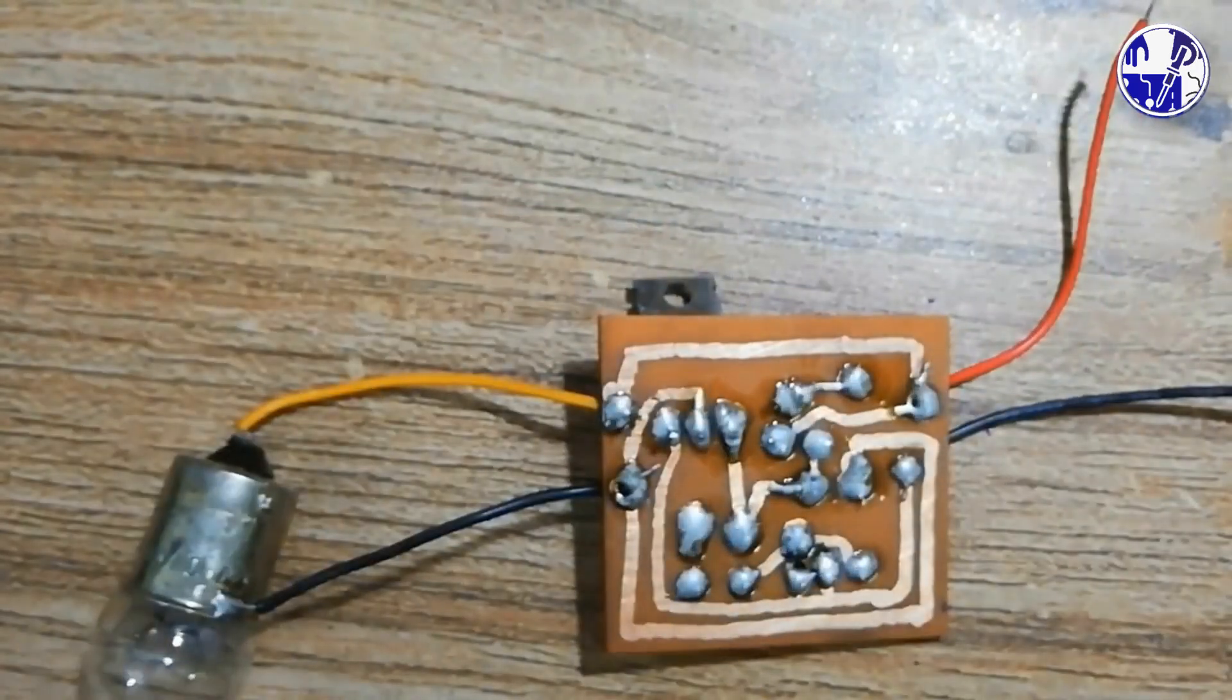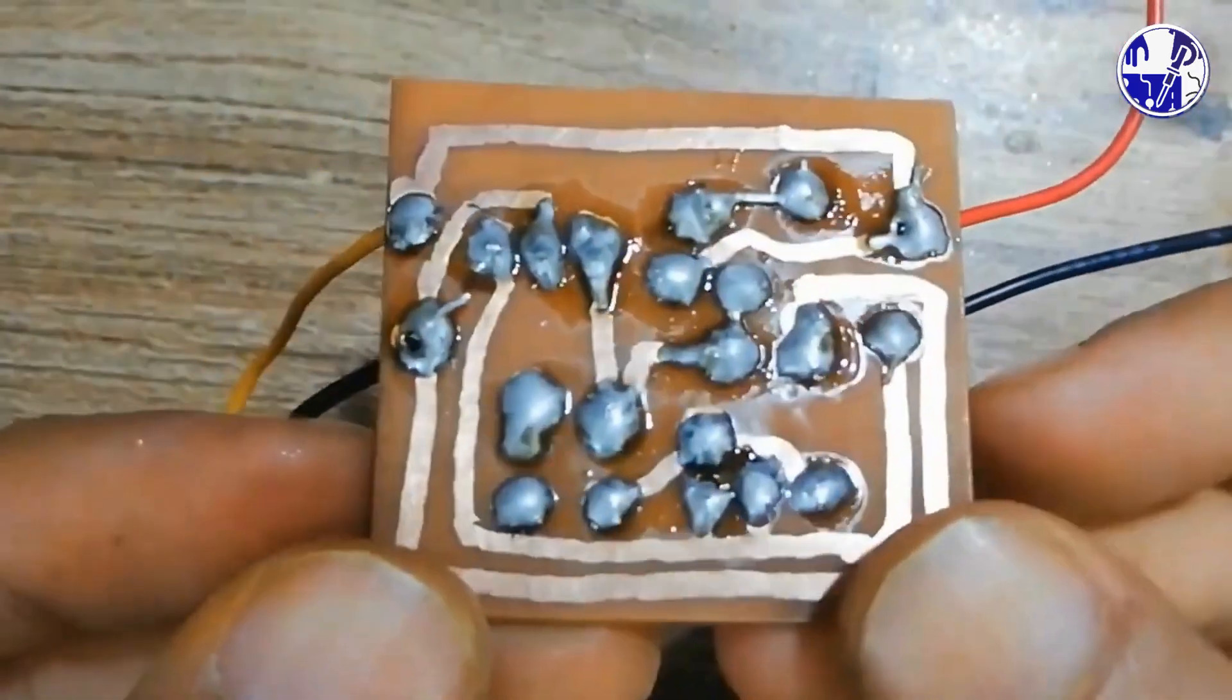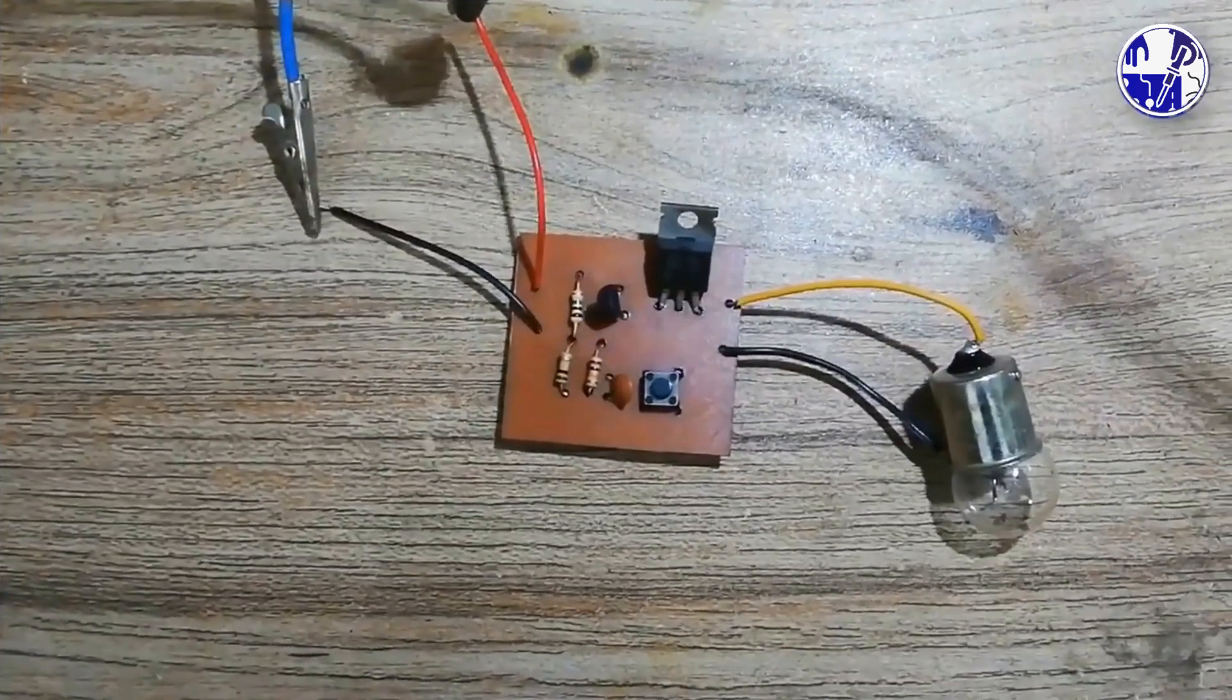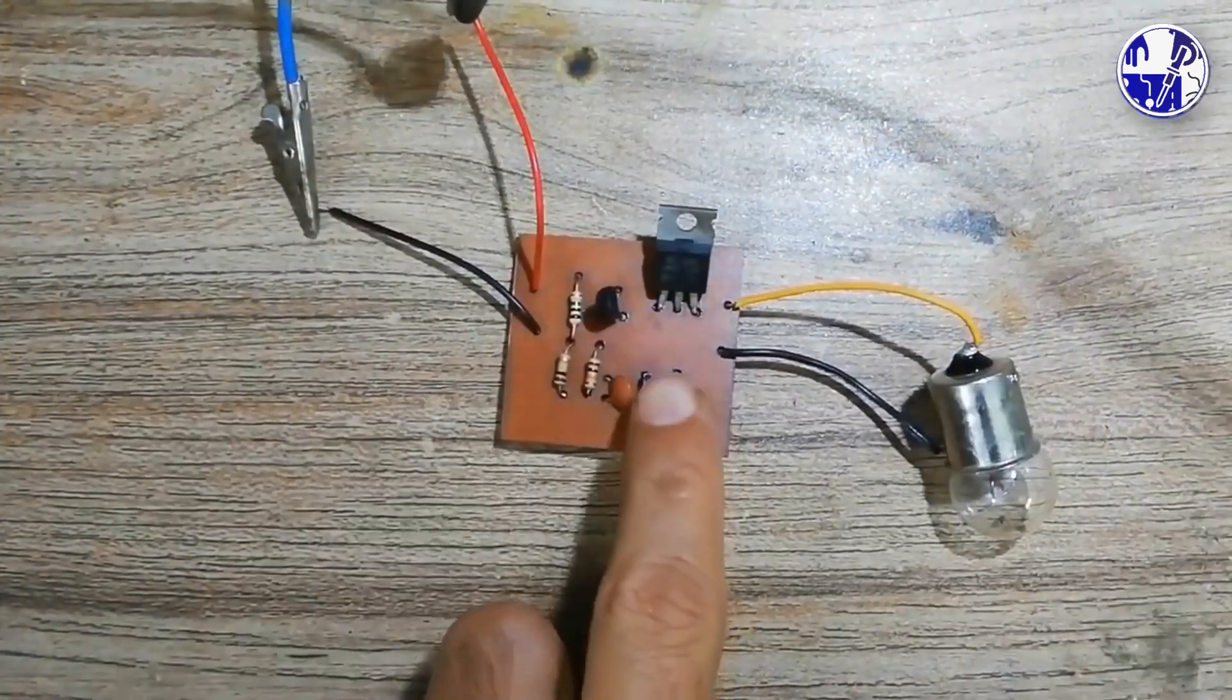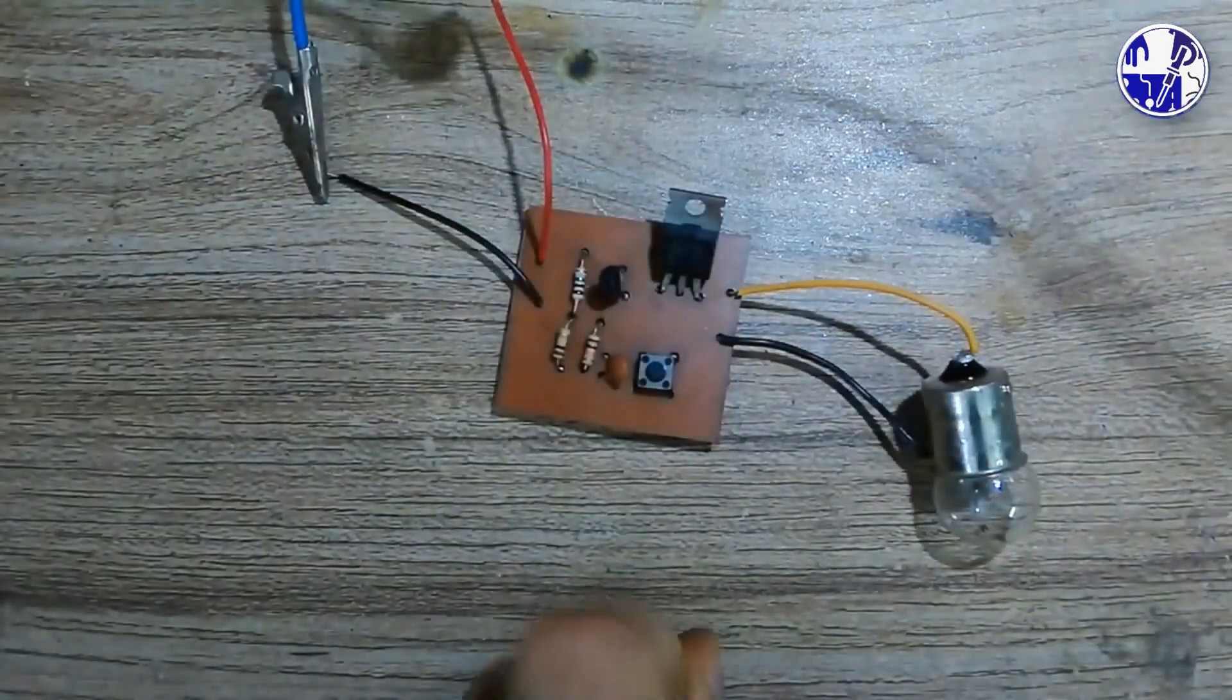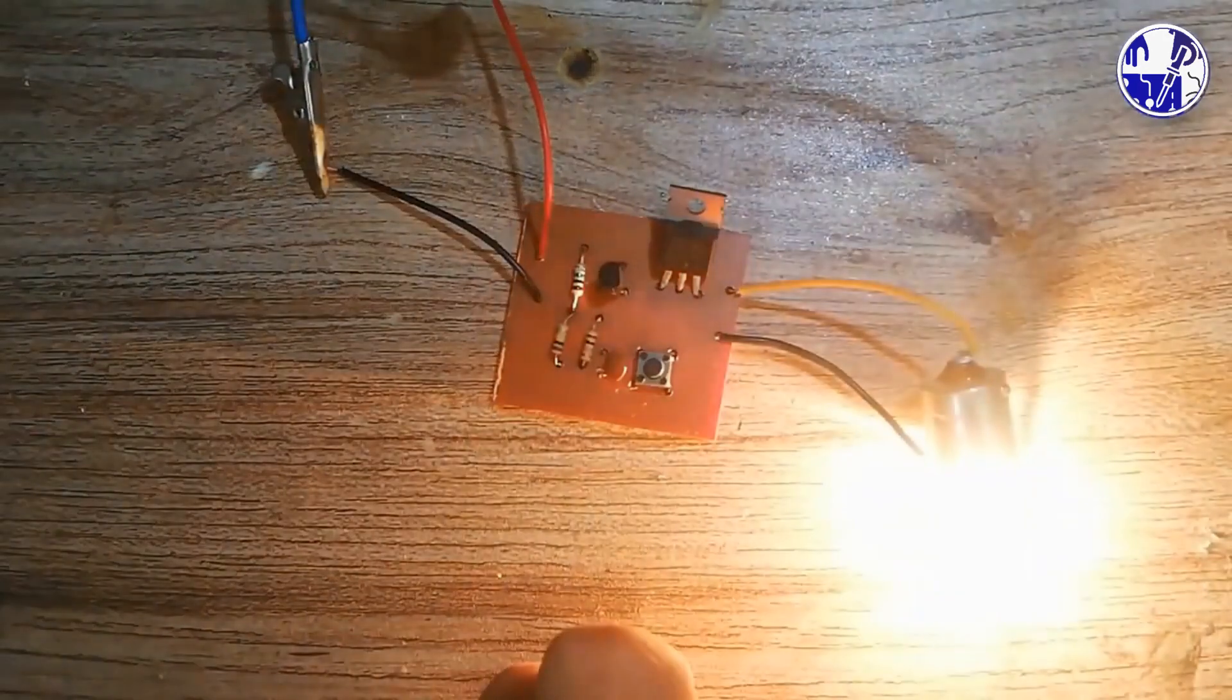Now, it's time to test the toggle switch. This circuit simplifies turning an appliance on and off using just one button. When you press the push button, the circuit turns on, and pressing it again turns it off.